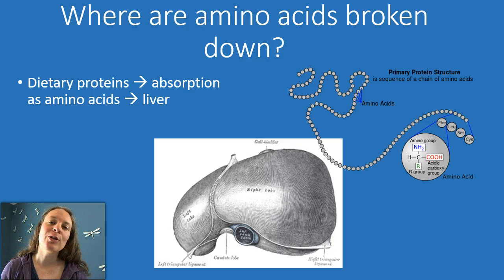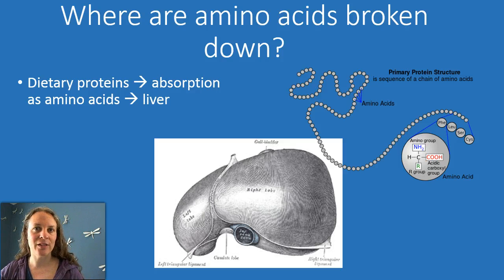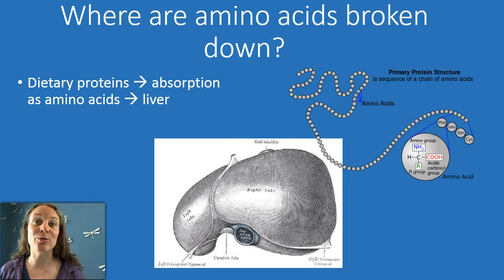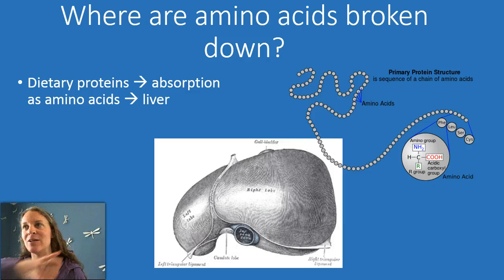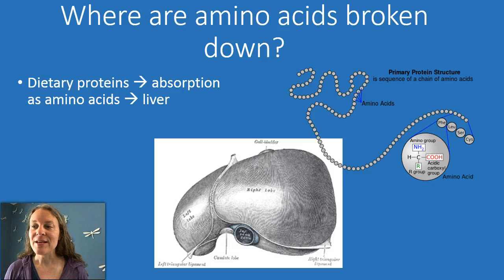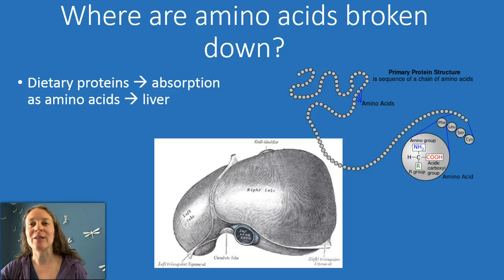Now, where does all of the blood from the small intestine go after it leaves the digestive area? Hopefully you remembered that it goes to the liver first, because the liver screens essentially everything coming from the digestive tract before it circulates to the rest of the body. So the liver is what's handling all of these amino acids that are coming in.